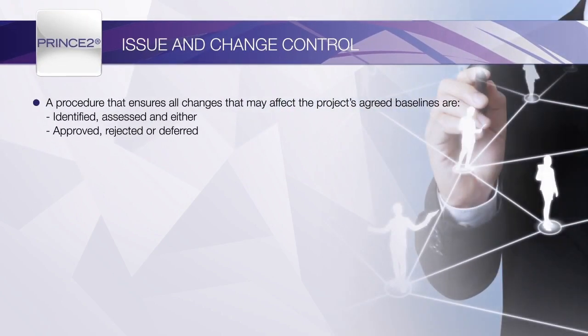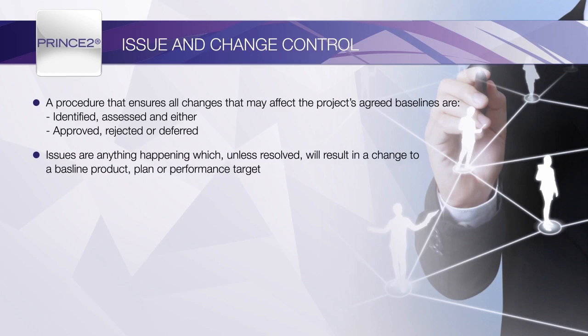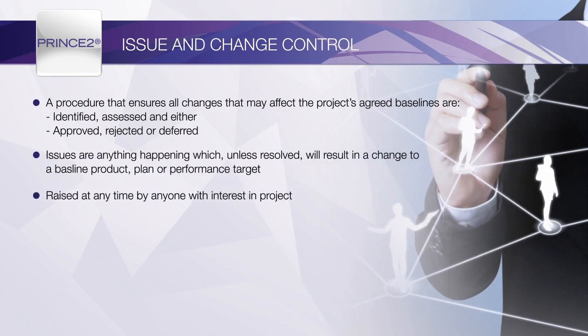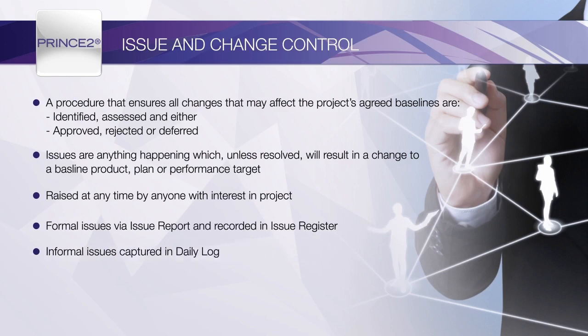As issues are raised, the Project Manager needs to decide whether the issue is formal or informal. If the Project Manager can deal with the issue without affecting products or tolerances, then the issue will be recorded in the daily log and dealt with. If, on the other hand, the issue will have an effect on a product or is considered important enough to affect the stage, then it should be recorded on an issue report. The issue is recorded in the Issue Register and is then processed using the Issue and Change Control Procedure.